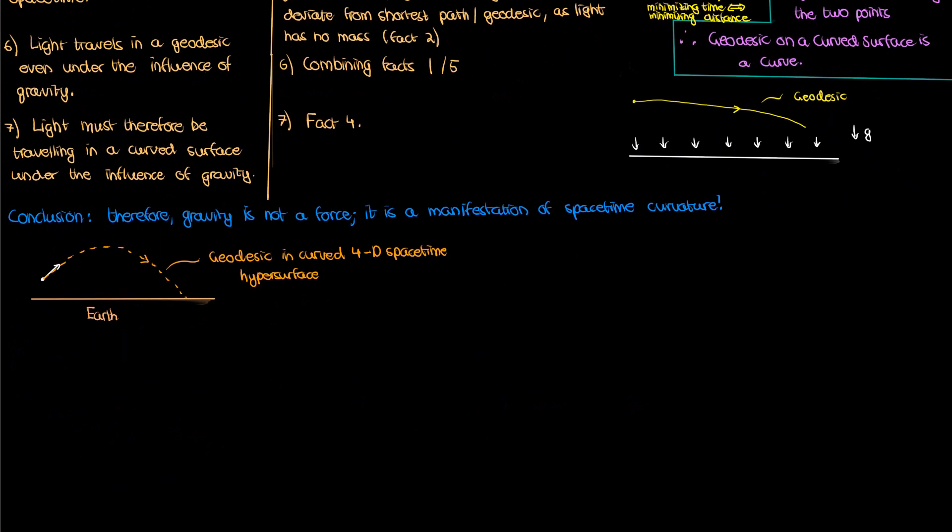We just can't see that curvature. We're inside the surface ourselves, but the ball is actually traveling in that curved hypersurface. The same logic applies to light. That's why light curves under the influence of gravity. It's not because gravity is a force that attracts light. Light has no mass, so you can't even exert a force on it. It's because space-time is actually curved near a massive object, and light is just following a curved geodesic on that curved space-time hypersurface.